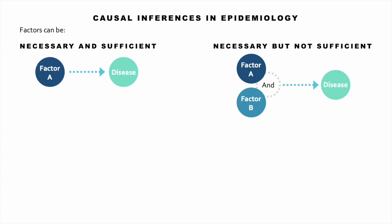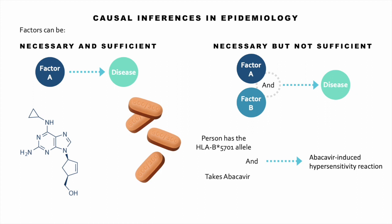If a factor is necessary but not sufficient, it can't cause the disease on its own — you need a second factor to be present as well. When prescribing an antiretroviral regimen containing abacavir, we always have to screen for HLA-B*5701, which is an allele of the major histocompatibility complex 1. If people have that allele, they're at risk of developing a hypersensitivity reaction if they take abacavir. Abacavir is a nucleoside reverse transcriptase inhibitor and is a component of Triumeq — abacavir, dolutegravir, and lamivudine combined into one tablet.